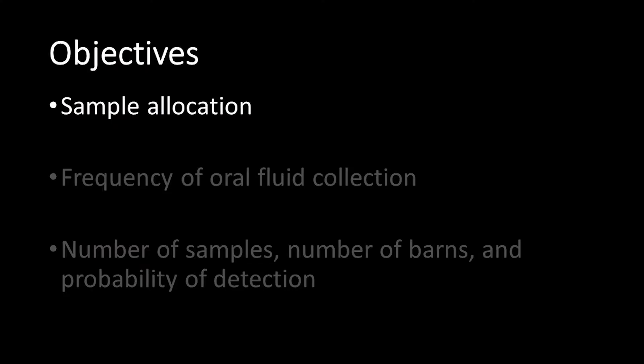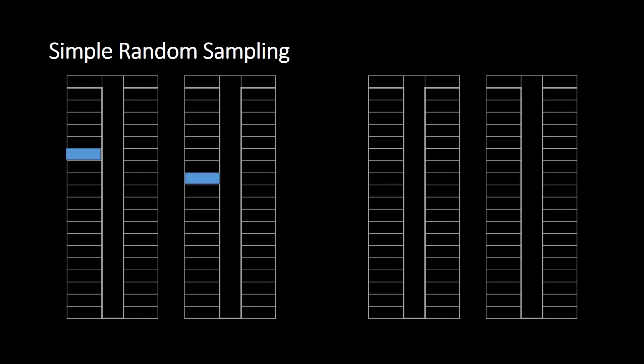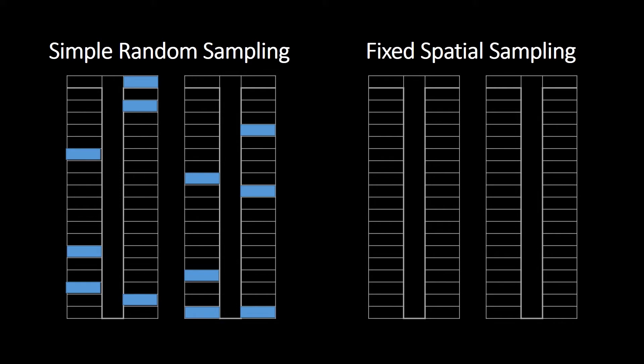First, this video will discuss guidelines for sample allocation, or how the samples should be spaced within a barn, as described in the paper by Rotolo and others. It is common practice for veterinarians and production personnel to hang oral fluid ropes in random locations within a barn. However, recent studies indicate that fixed spatial sampling may be more effective when surveilling a herd for a disease.